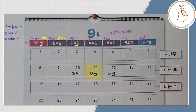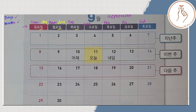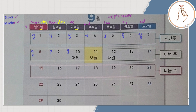Now for our numbers down here, a quick review. For the unit of ones: il, i, sam, sa, o, yuk, chil, pal, gu. Then for the unit of tens, we have ship. From 10 to 30, these are now the units of tens — two figures.